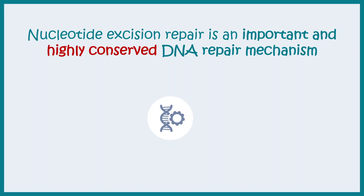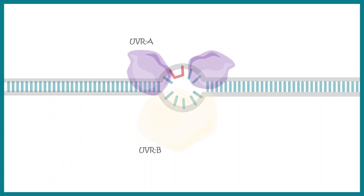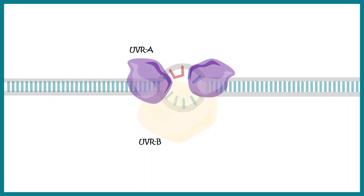From E. coli to humans, you would find these kinds of repair systems. For simplicity, we are going to look at the E. coli nucleotide excision repair system first, and then we are going to delve into details of the human nucleotide excision repair system. This process begins with detection of a distortion in the DNA helix.